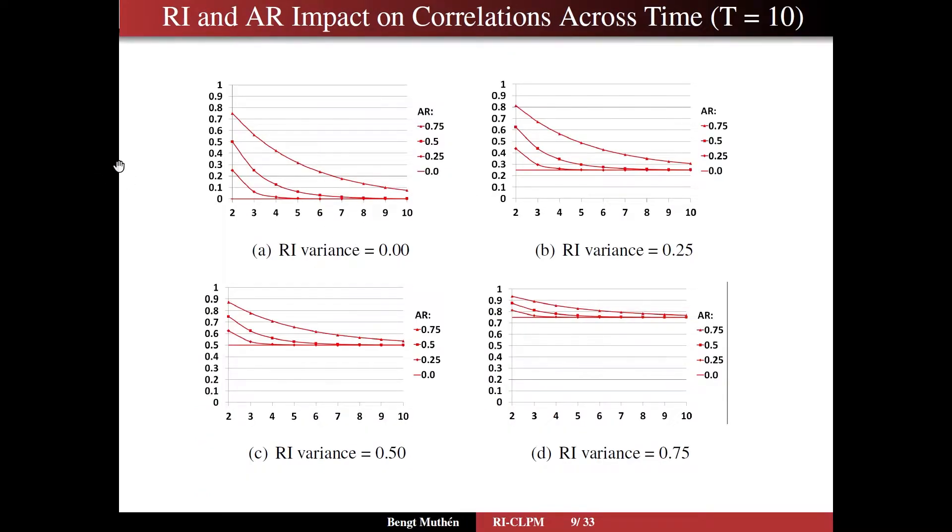Turning to slide 9, it's interesting to look at how the random intercept and the autoregressions impact the correlations across time. So we're looking at 10 different time points here. And 2 here means that at time point 2, how high is the correlation with time point 1? This is the case where the random intercept variance is zero, so essentially there is no random intercept, but only an autoregression.